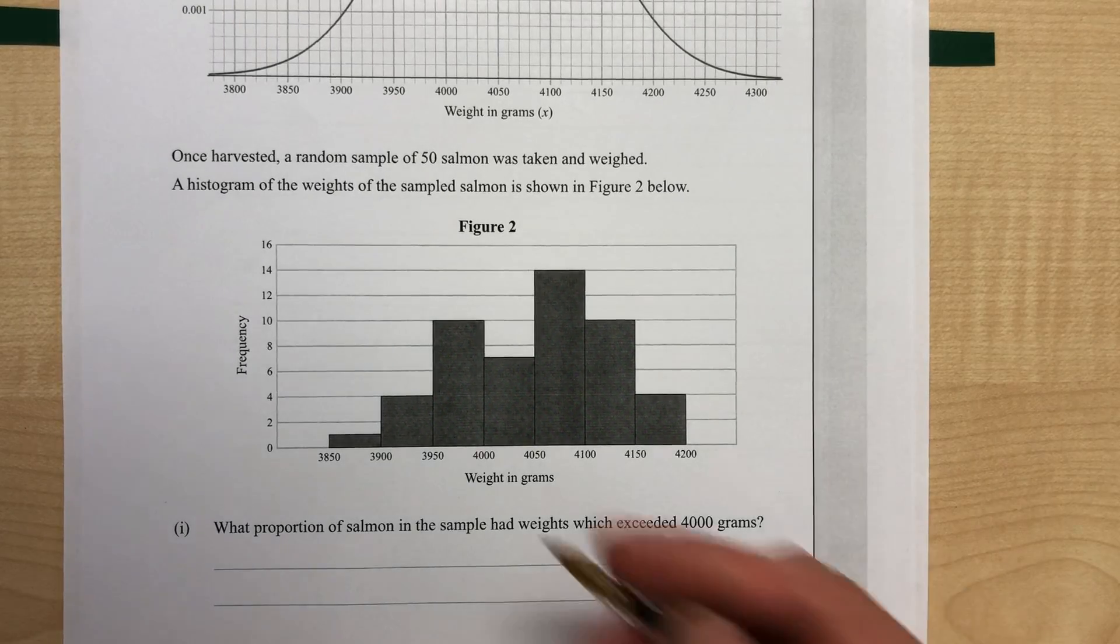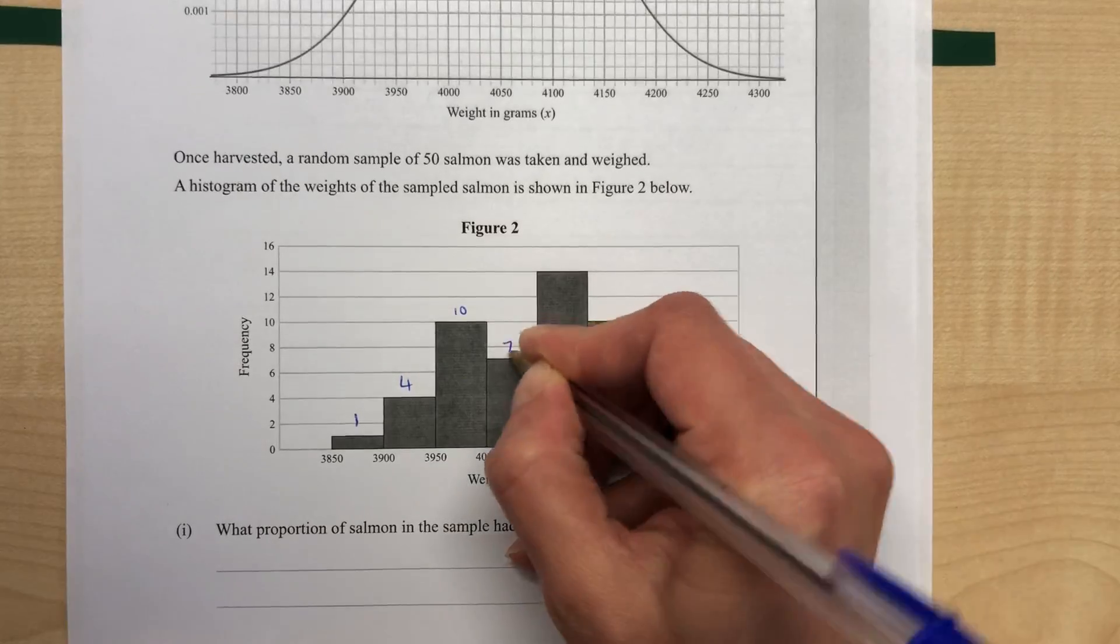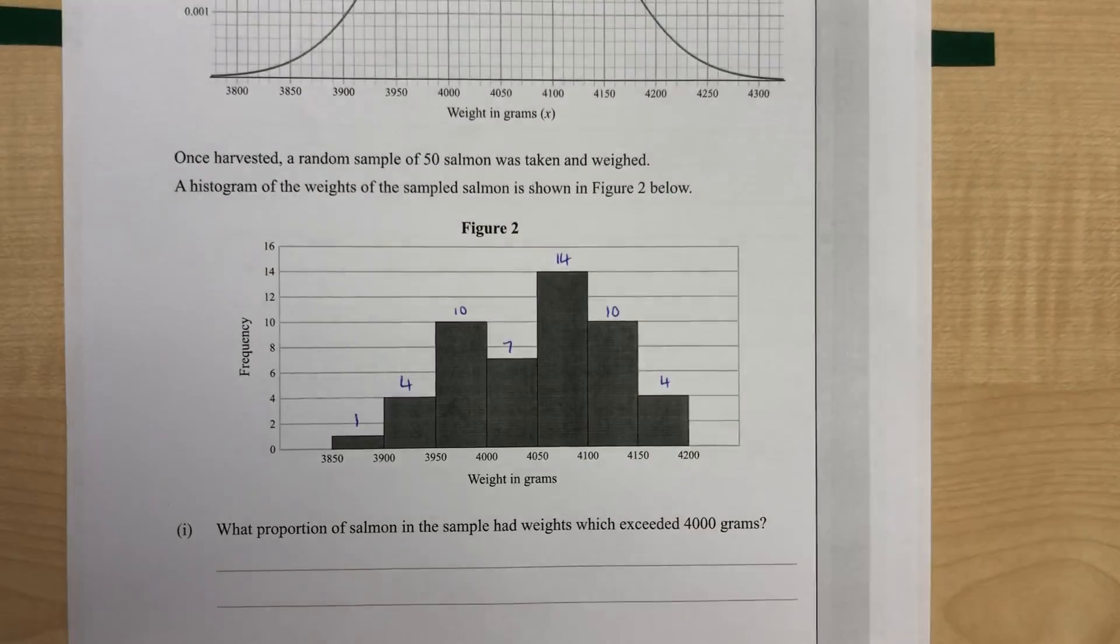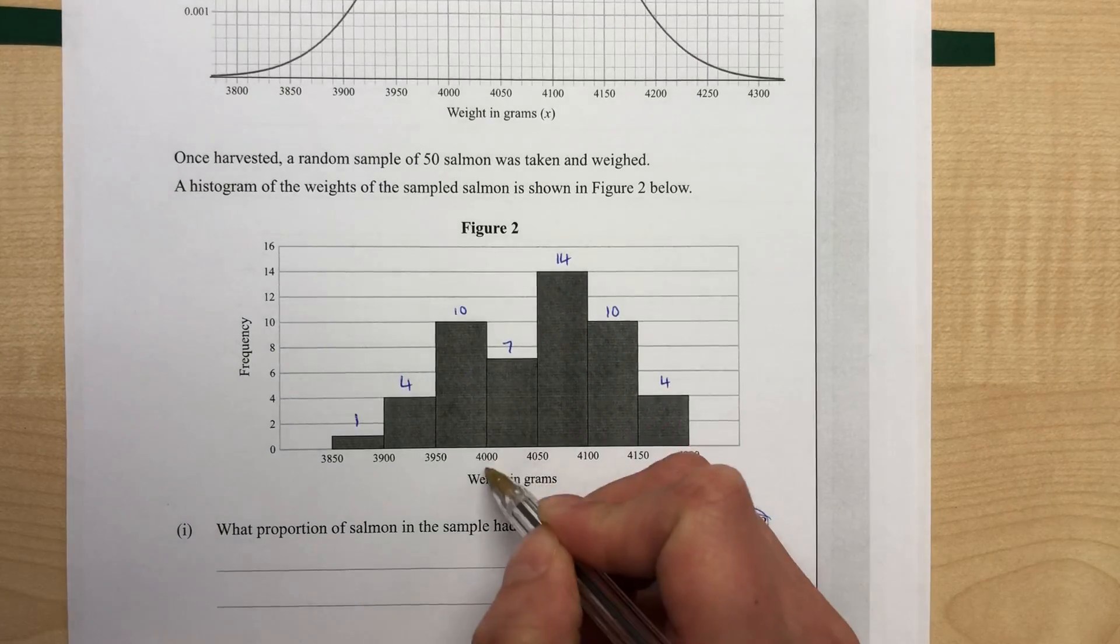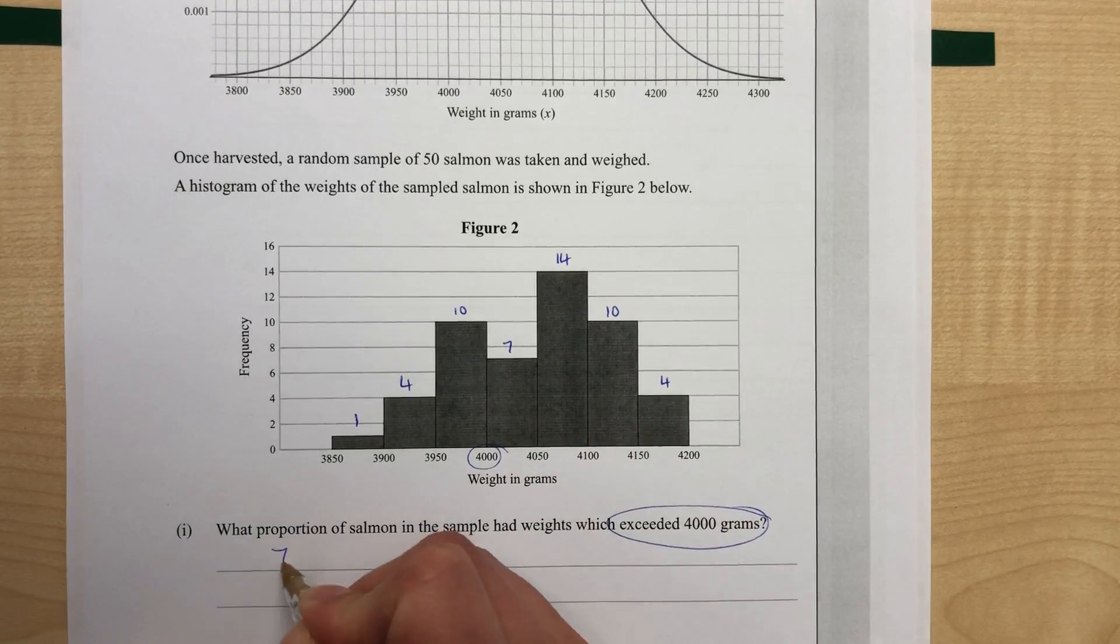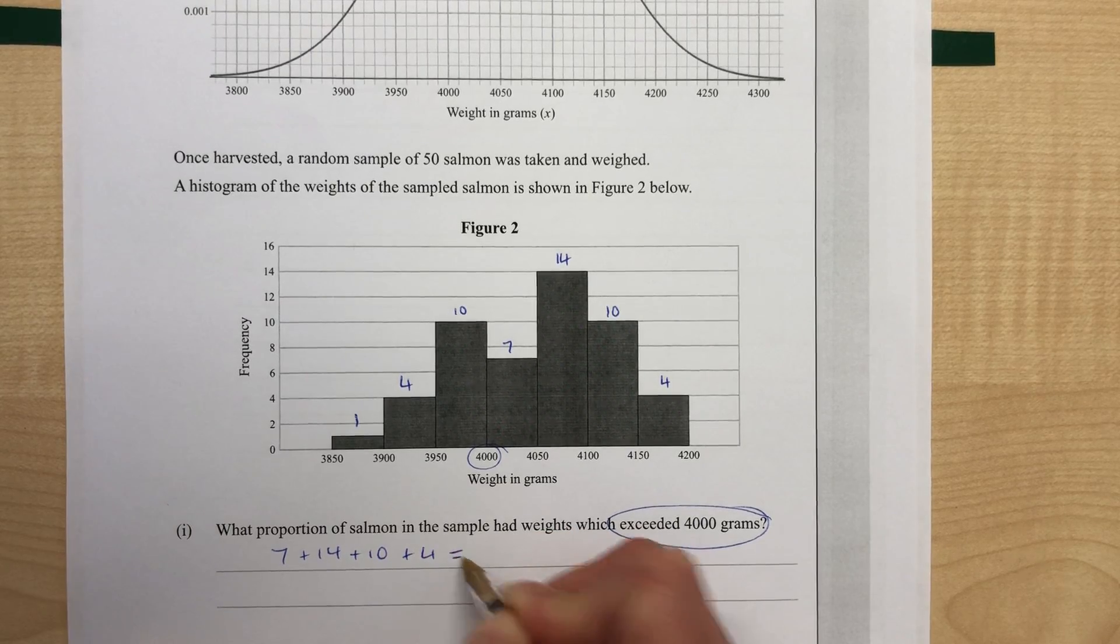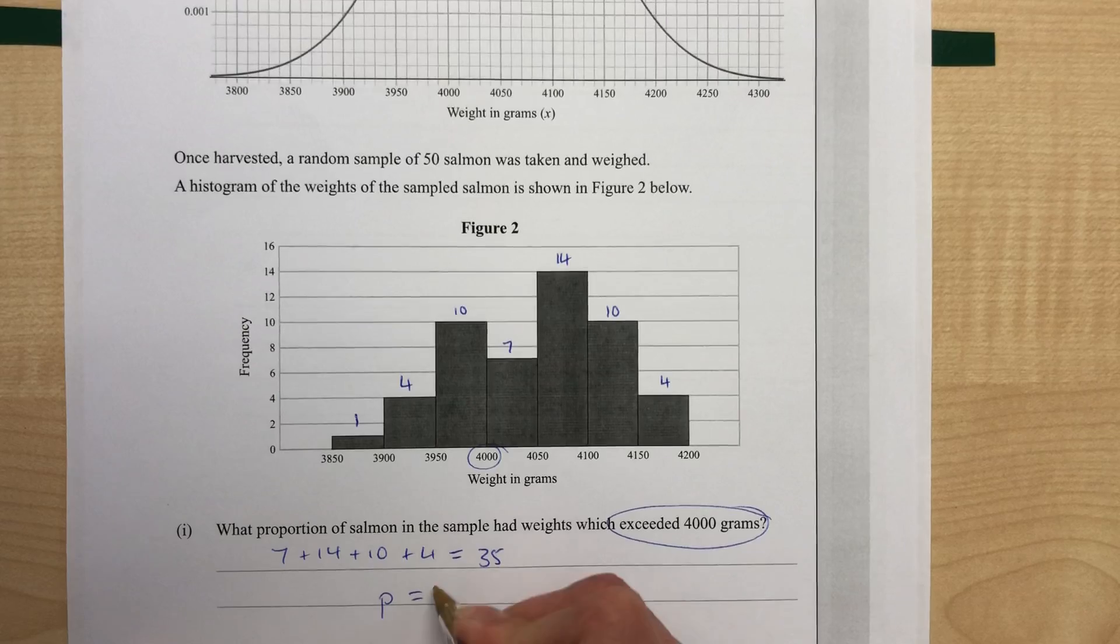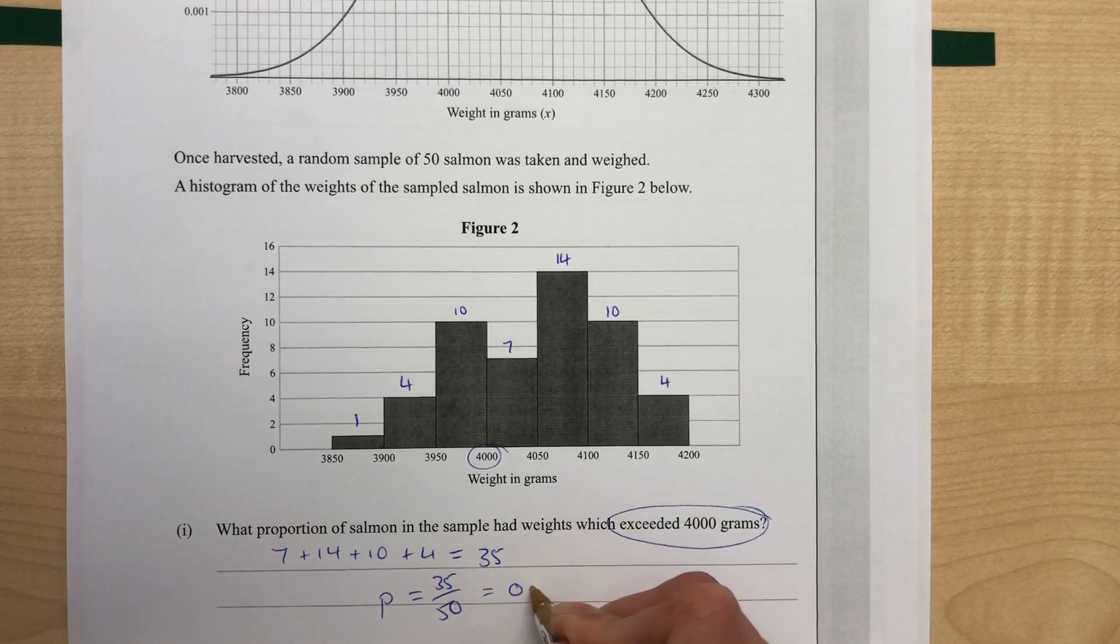So we need to count up how many there are. So there are 1, 4, 10, 7, 14, 10, and 4 in each of those categories. We want more than 4,000, so here's our 4,000 cutoff. So 7 plus 14 plus 10 plus 4 gives us 35. So the proportion we're looking for is 35 out of 50. Or you could write that as a decimal of 0.7.